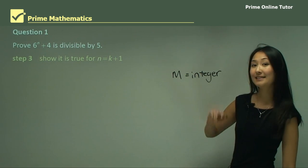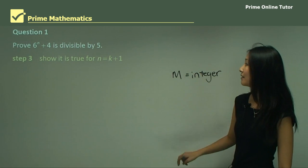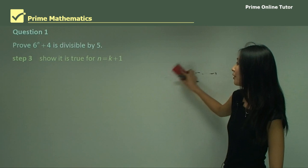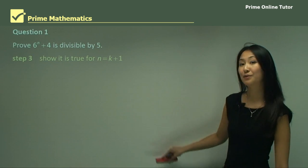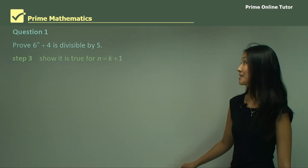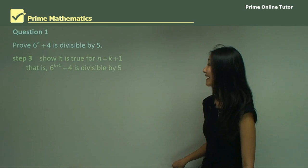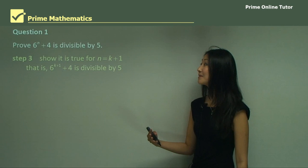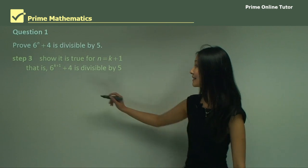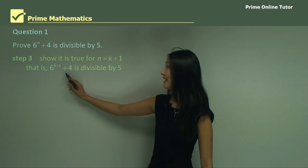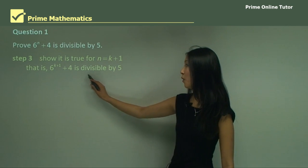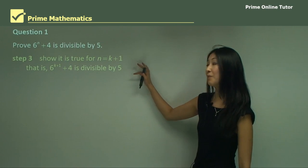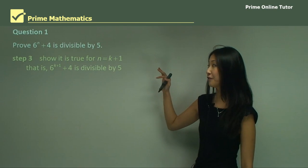In step three we want to show that it is true for n equals k plus one. We write: six to the power of k plus one, plus four, is divisible by five. This is what we want to prove.